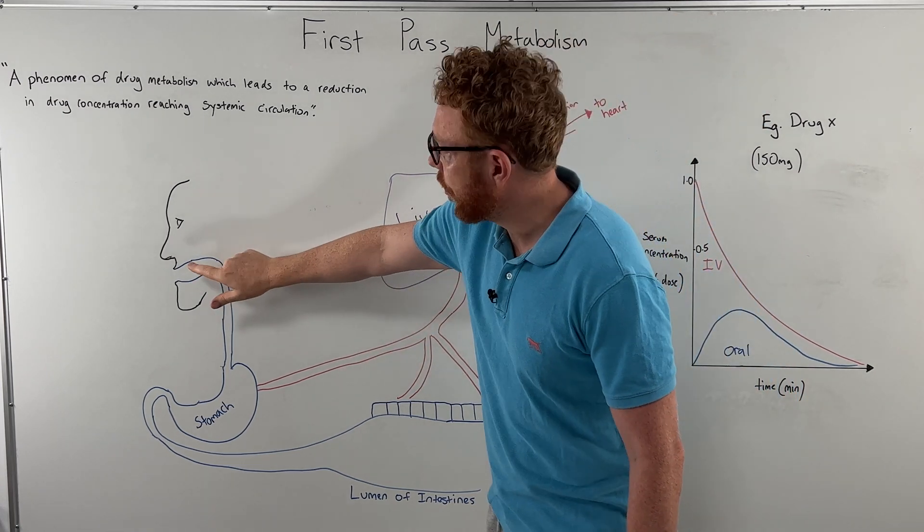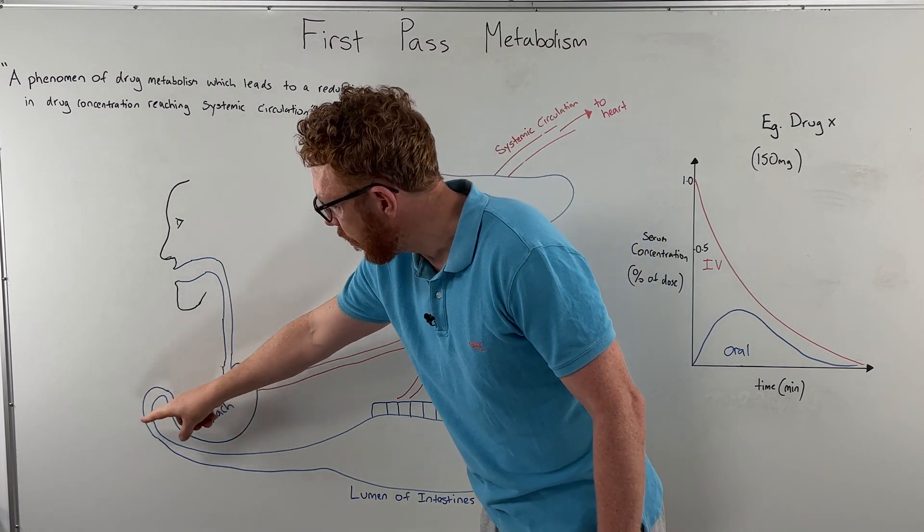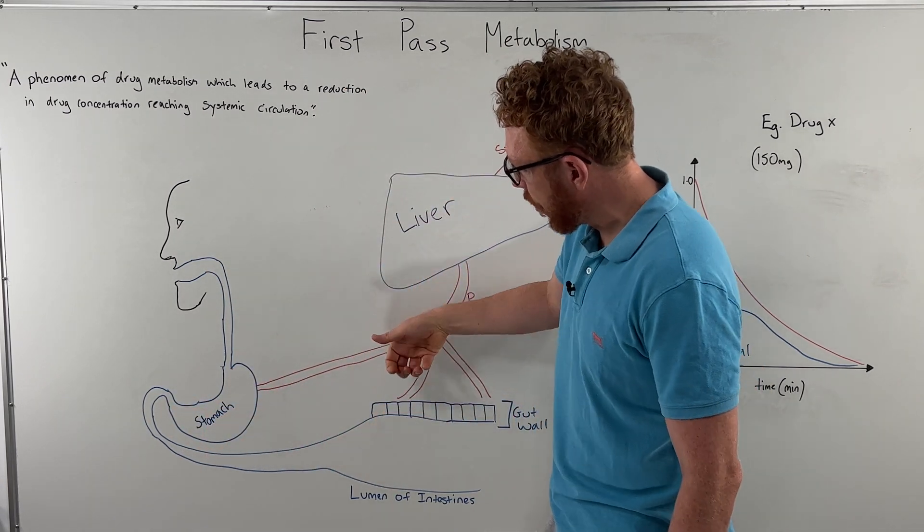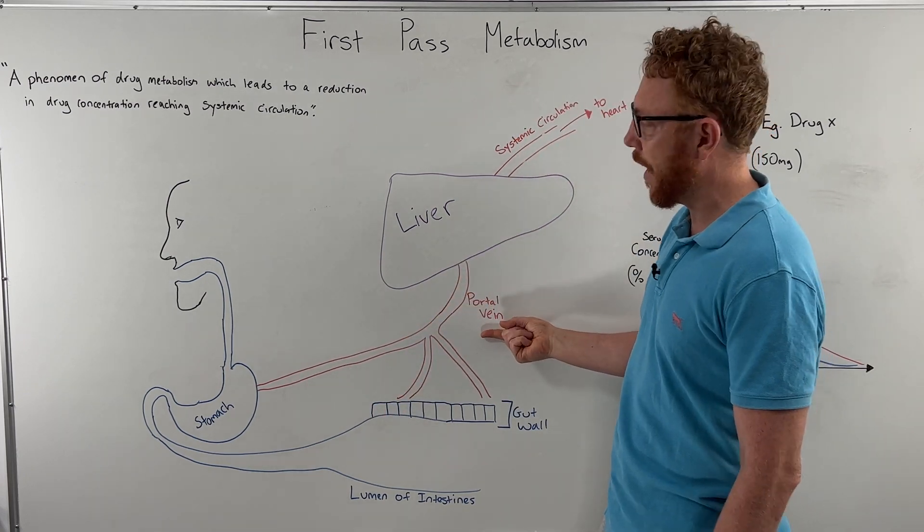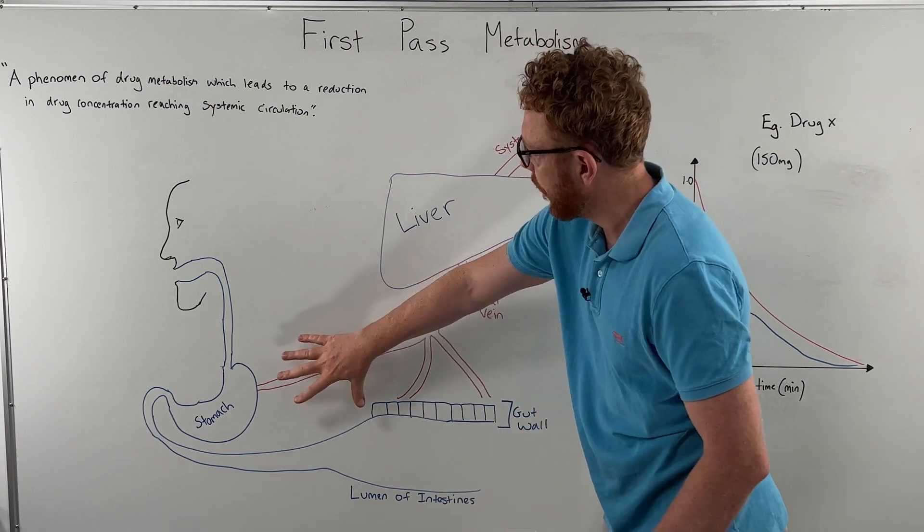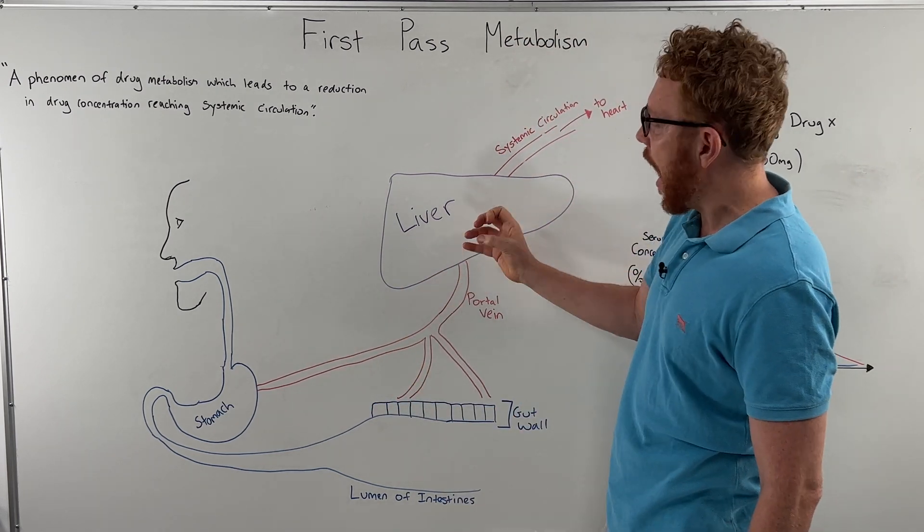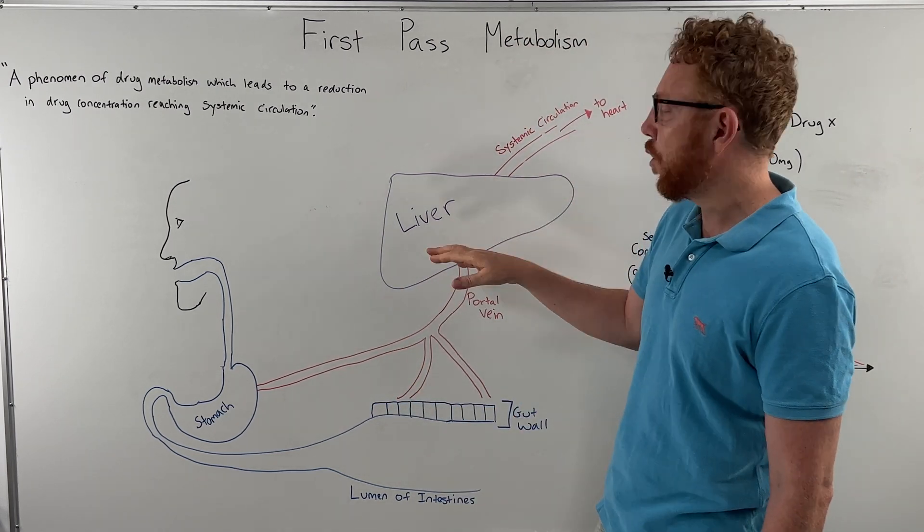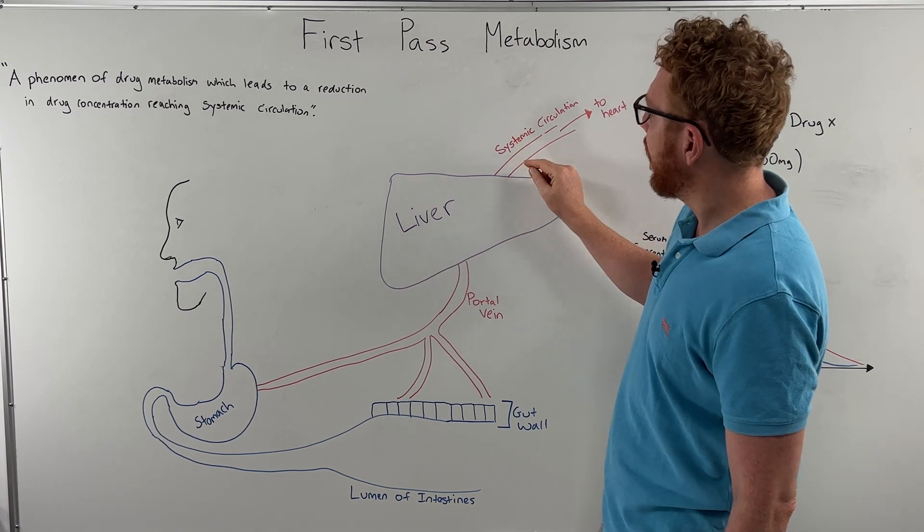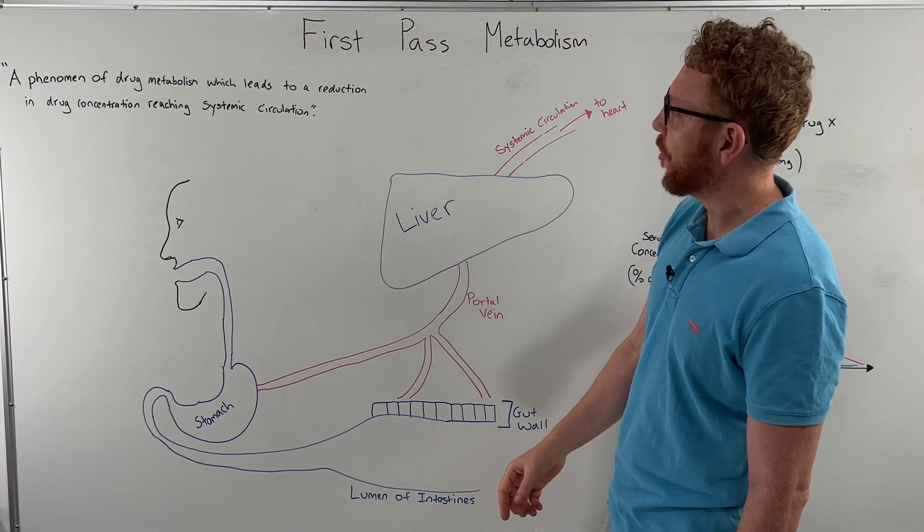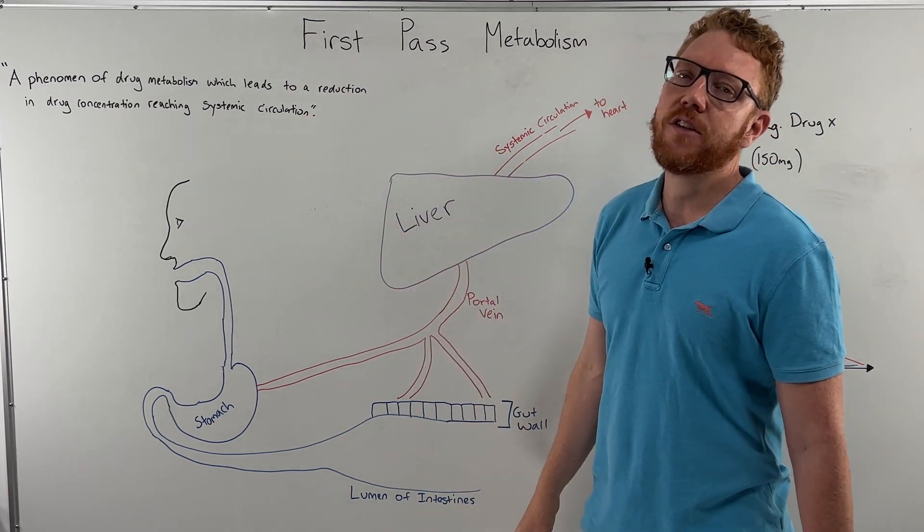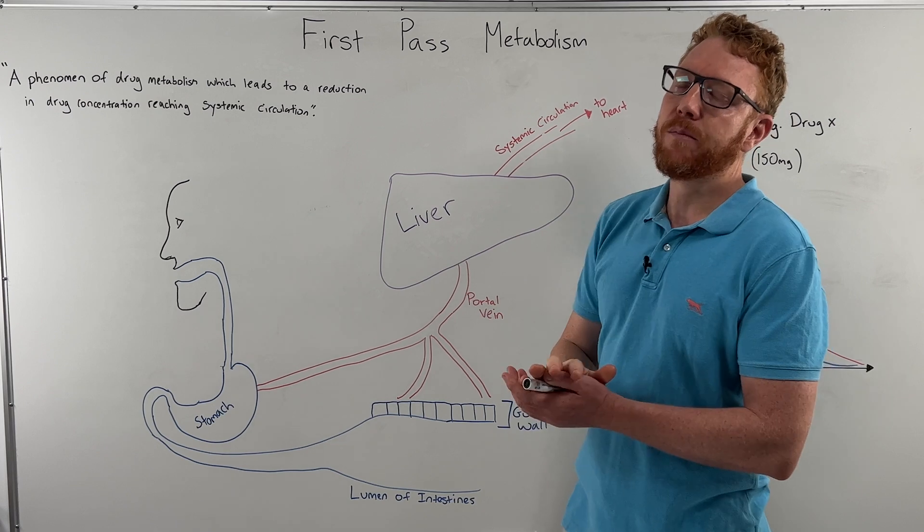So what the drug has to do is it has to come through this long tract. It has to get across the gut wall, get taken by the blood which we call the portal vein, the portal hepatic system, taken to the liver. How much of that drug could potentially be metabolized by the liver to see what percentage of the dose gets into the systemic circulation? This is essentially impacted by first pass metabolism.